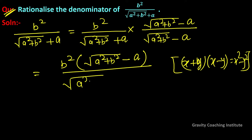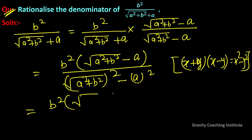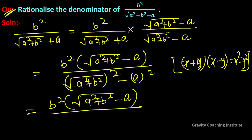...under root (a² + b²) minus a whole square. This equals b² into bracket of under root (a² + b²) whole square minus a whole square, which equals b² into (a² + b² - a²). Here a² and a² cancel out.